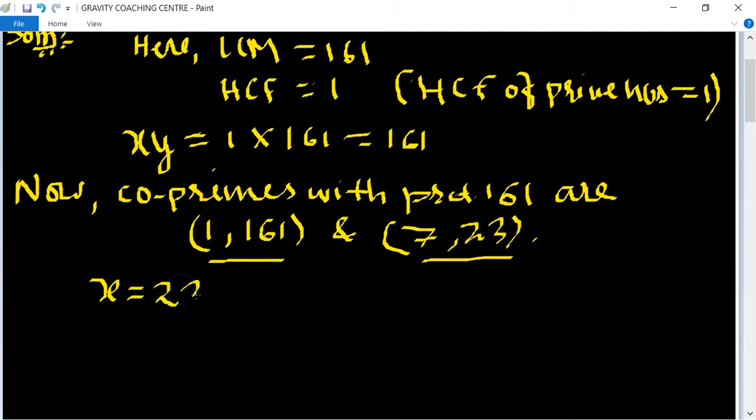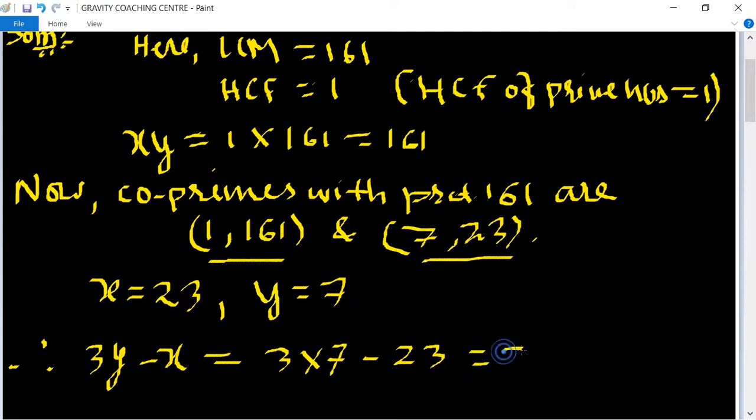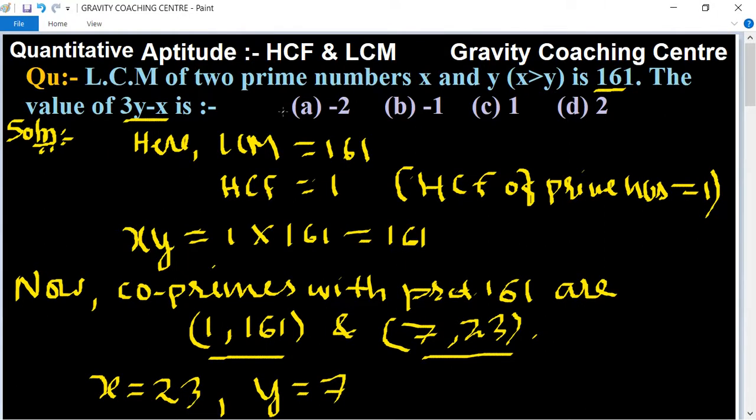Therefore, 3Y minus X equals 3 times 7 minus 23, equals 21 minus 23, equals minus 2. So option A is the right answer.